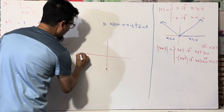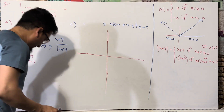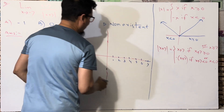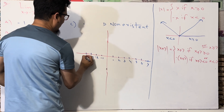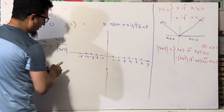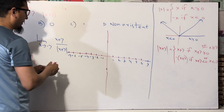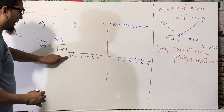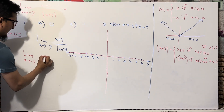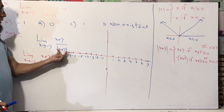Looking at the graph, on the number line we have 1, 2, 3, 4, 5, 6, 7 on the right and minus 1, minus 2, minus 3, minus 4, minus 5, minus 6, minus 7 on the left. So minus 7 is marked here. The expression in the numerator is (x + 7), which is the same as what is inside the mod.